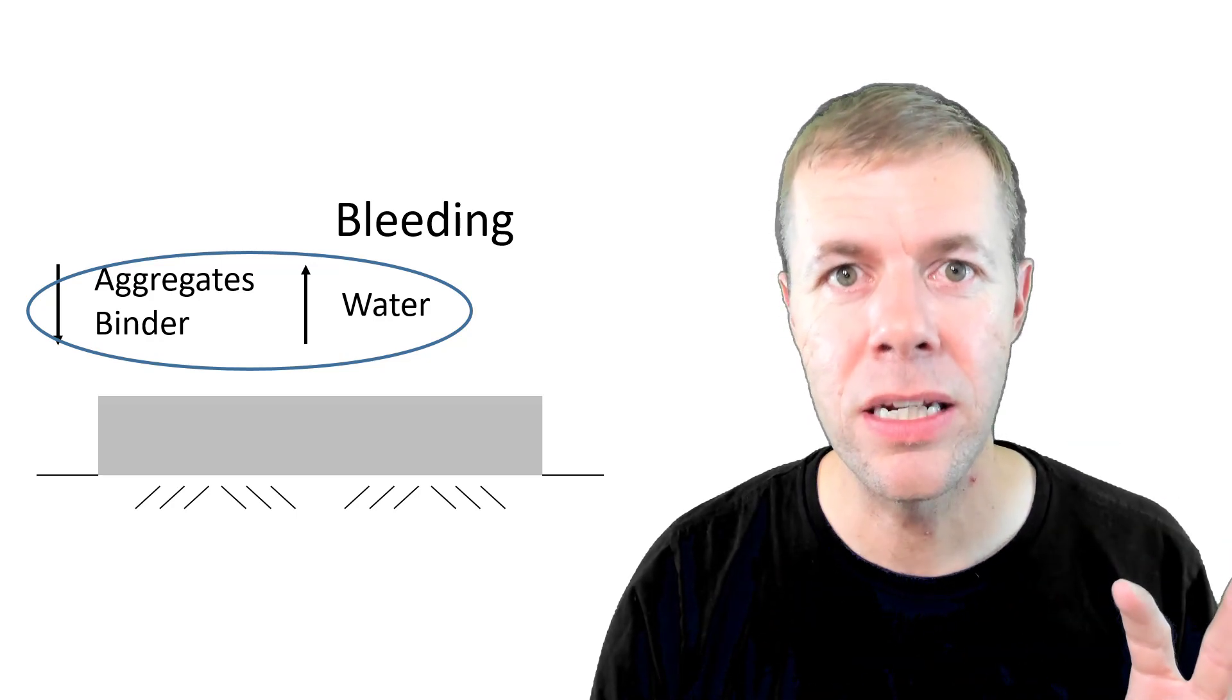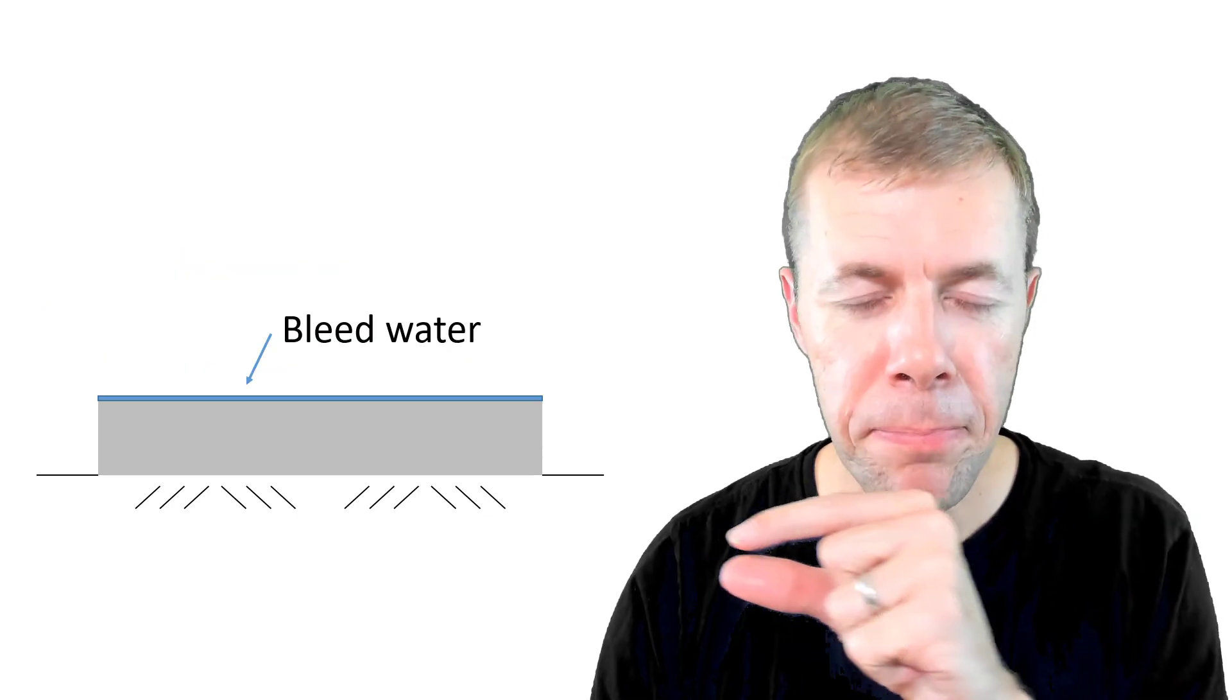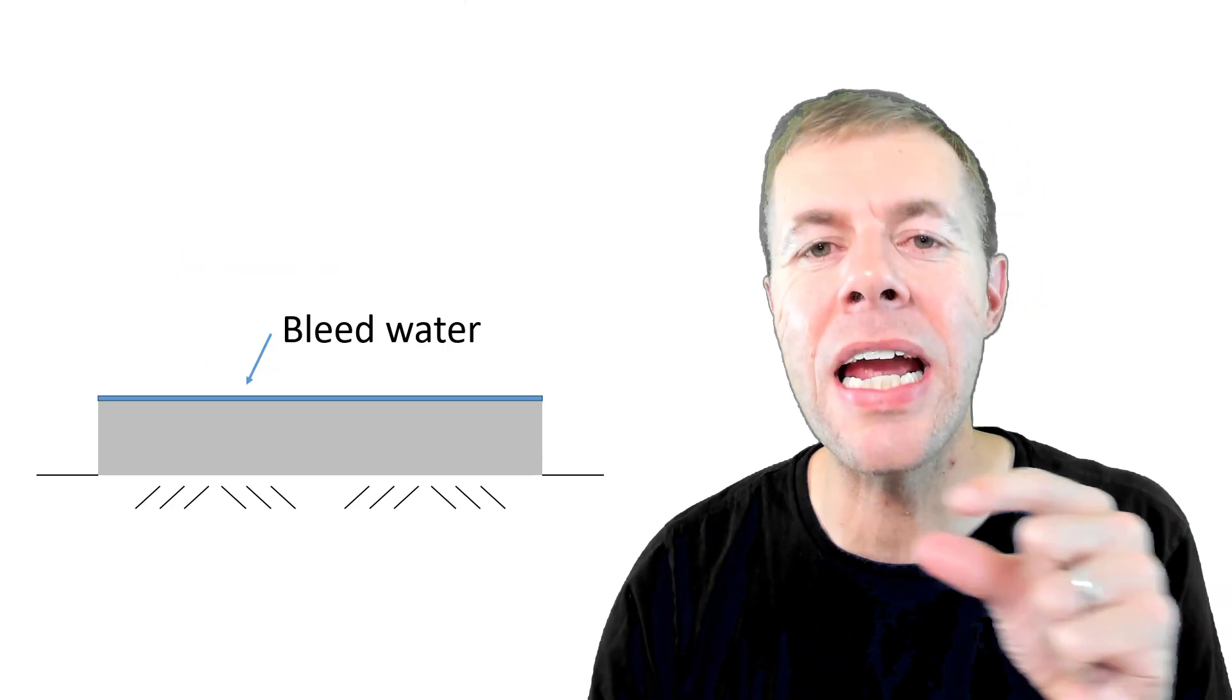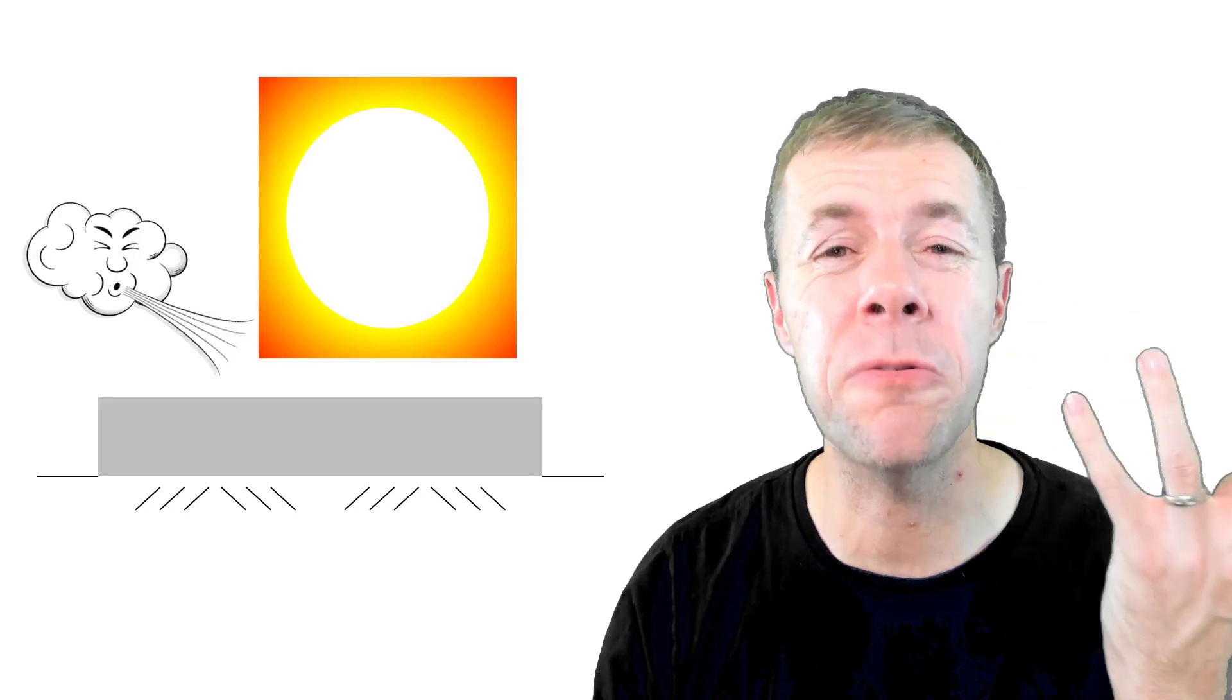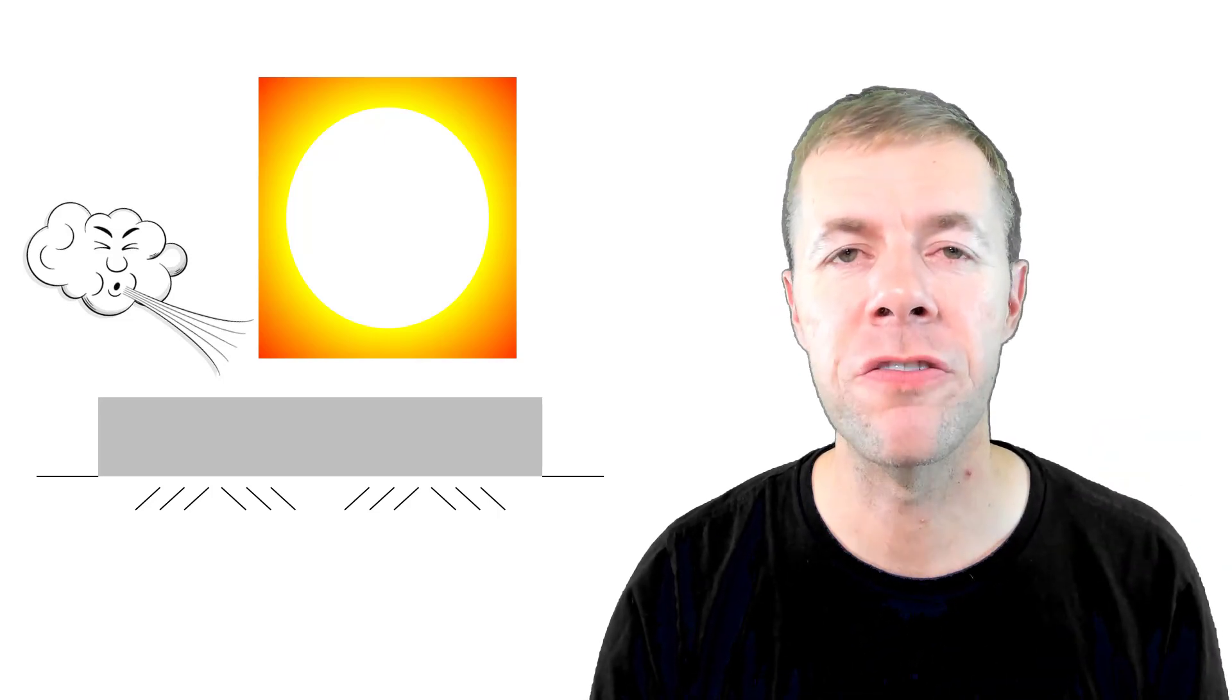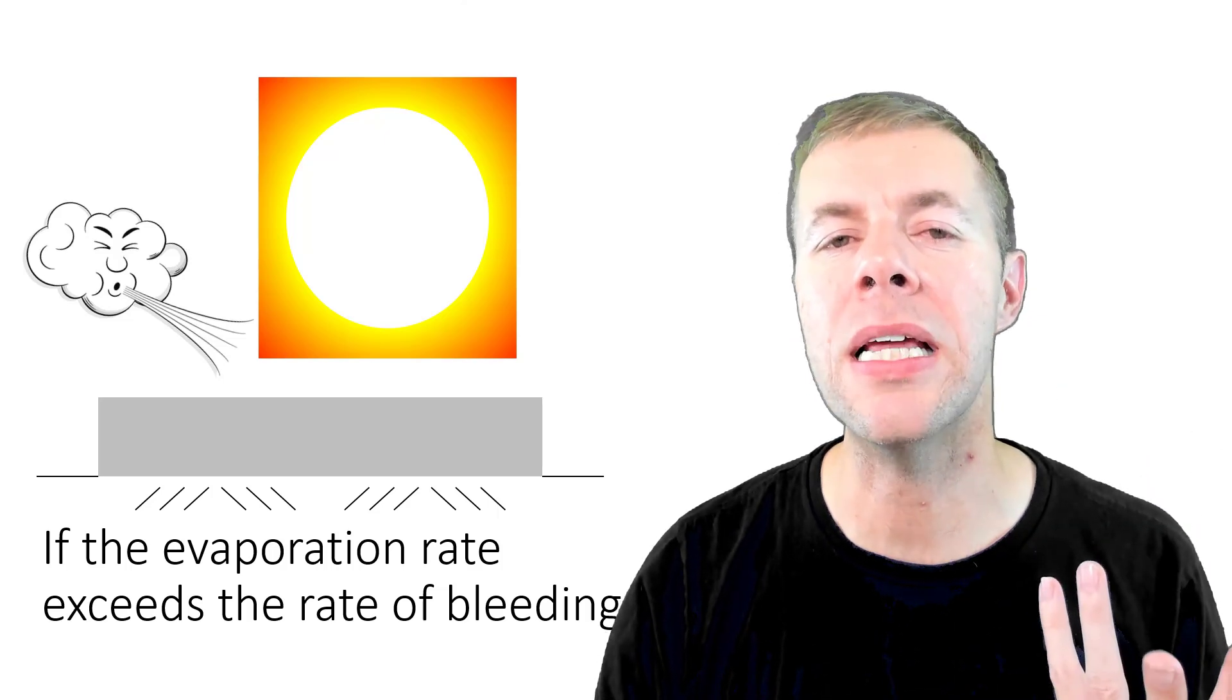When concrete bleeds, you get a thin layer of this water on the surface. Over time as the wind blows and the sun comes beating down on the top, that layer will actually evaporate off. If the evaporation rate exceeds the rate of bleeding, your concrete is gonna dry and shrink at the surface.